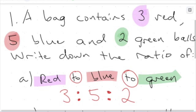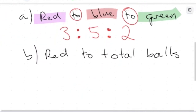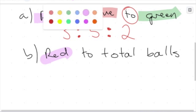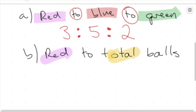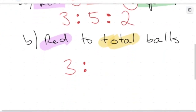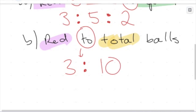For the next part, we want the ratio of red to the total. The red ones — we have three. The total is how many balls we have altogether: three red, five blue, two green, which adds up to 10. So the ratio of red to total is 3:10.